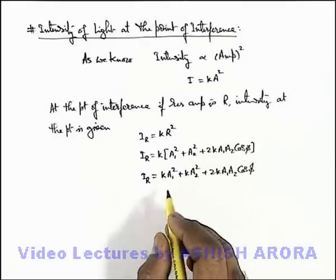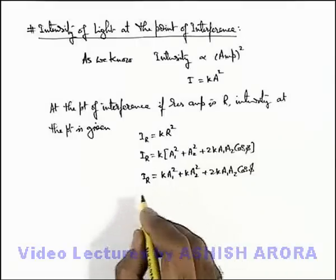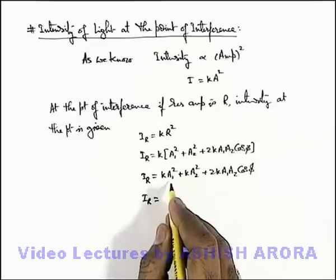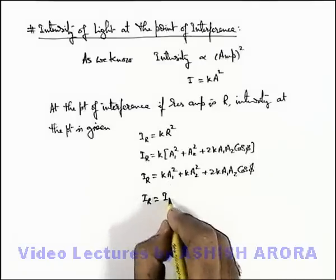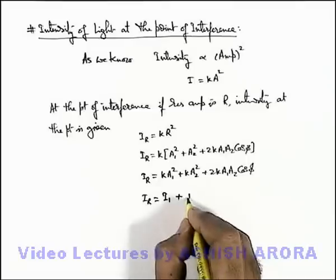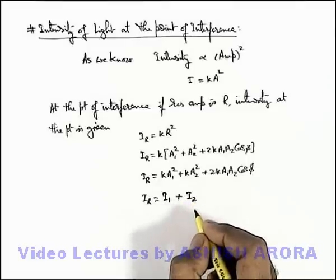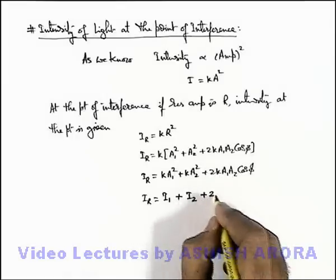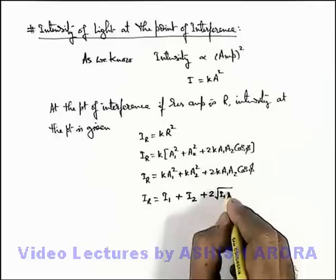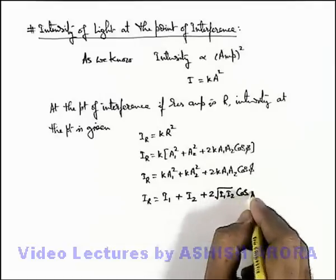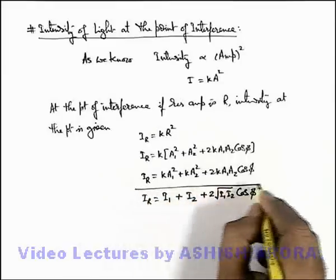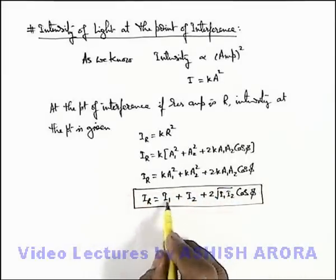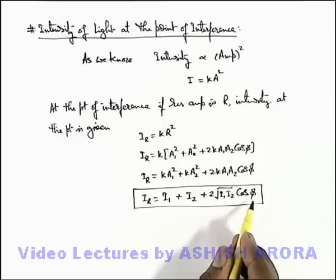In this expression we can see that k·A1² is the individual intensity of the first wave, which we write as i-1, and k·A2² is the intensity of the second wave, written as i-2. The term 2·k·A1·A2 can be written as 2 times root of i1·i2. So the resulting intensity is: i-R = i1 + i2 + 2·√(i1·i2)·cos(φ), which depends on the individual intensities and the phase difference between the two waves.